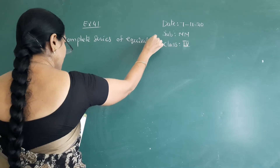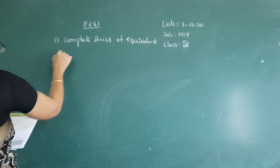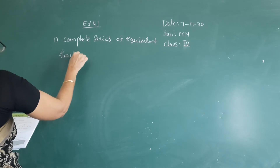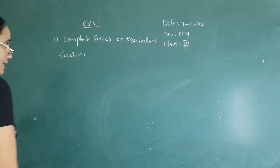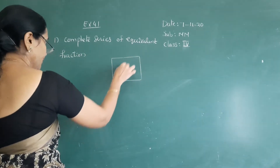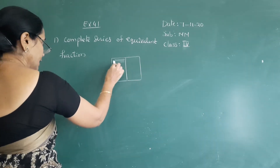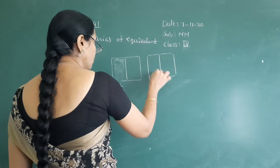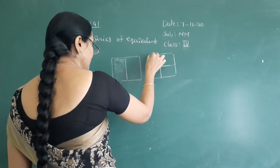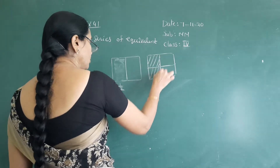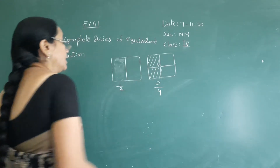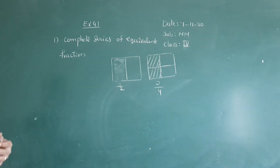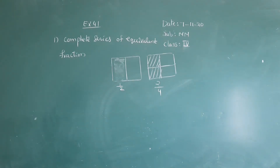So for them it is a very new chapter — how to define equivalent fractions. For example, see this figure. You have to shade this part. In the same figure you can divide it into 4 parts and 2 parts should be shaded. So this is 2 by 4. The shaded parts are the same, so these 2 fractions represent the same part. Those fractions are said to be equivalent fractions.